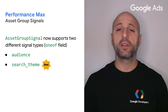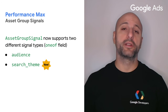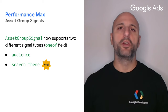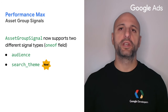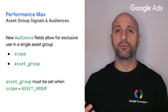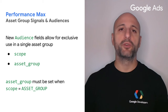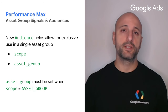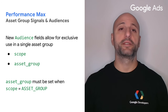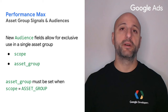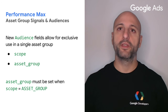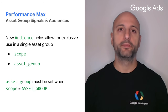Asset group signals supported audiences prior to version 15. However, the audience resource now supports two new fields — scope and asset group — which allow you to limit audience usage to a specific asset group. The asset group field must be set if and only if the scope has a value of asset group.